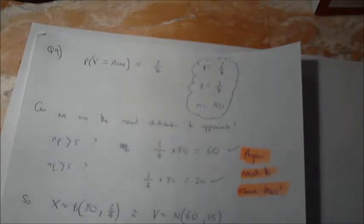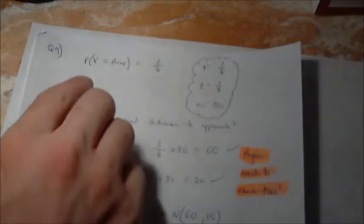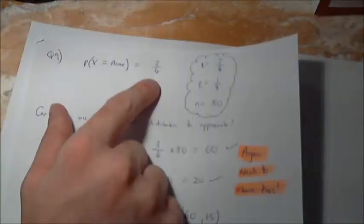This question says a manufacturer states that three out of four people prefer our product Acme to a competitor's product. As soon as I've read that first sentence, I straight away say the probability of it being Acme or someone liking Acme is three quarters.